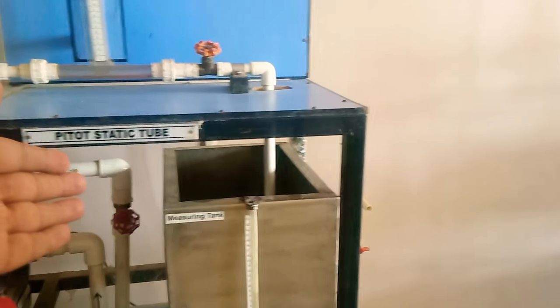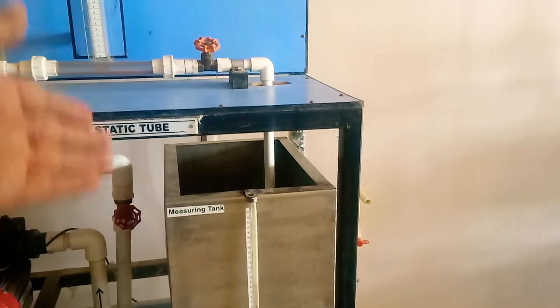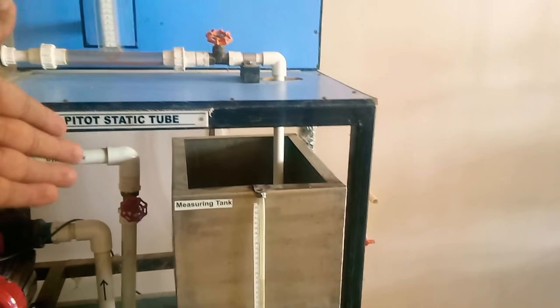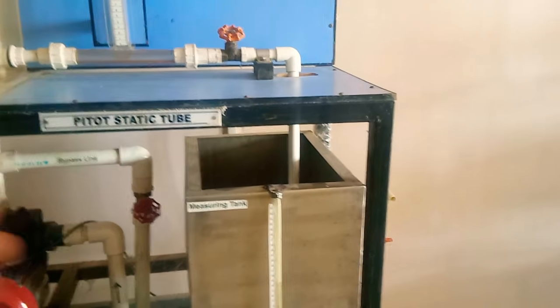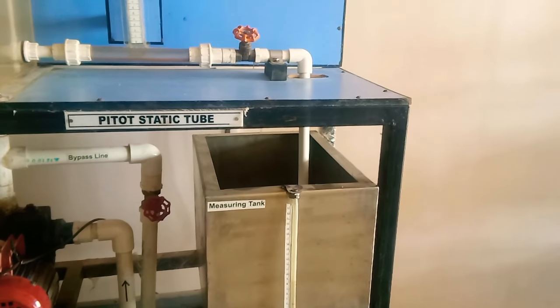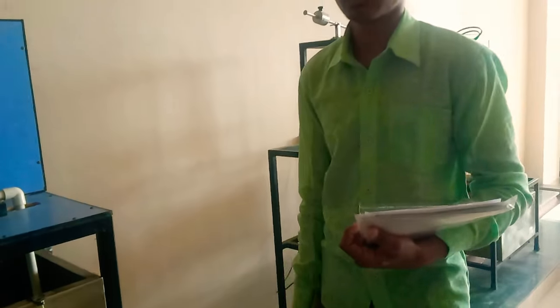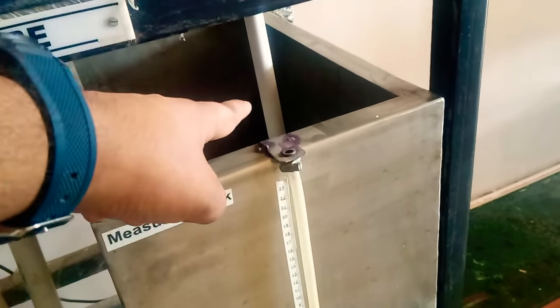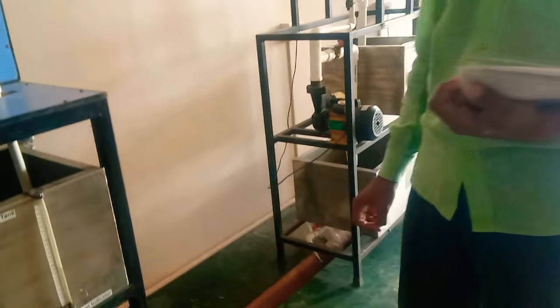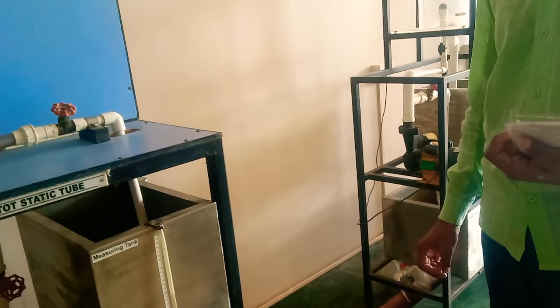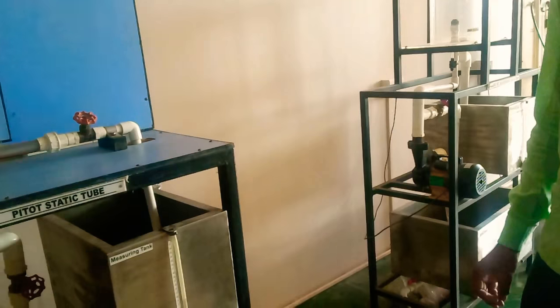So Q will be found out by using this measuring tank. 10 liter, how much time is required to fill up the tank by 10 liter? Then, multiply it with 10 raised to minus 3, and divide by area of this pipe, which is having a diameter of 2 centimeter. So pi by 4, 0.02 square. Because 2 centimeter needs to convert it into meter.